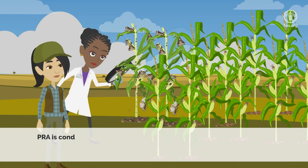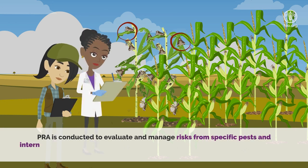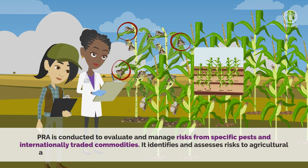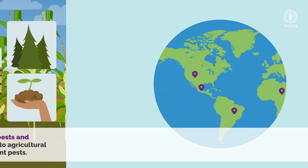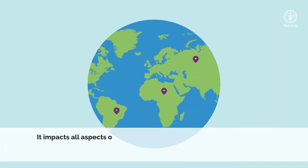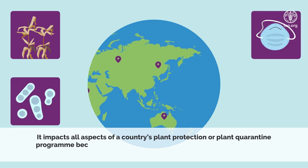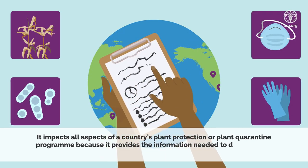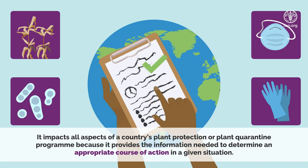Pest risk analysis is conducted to evaluate and manage risks from specific pests and internationally traded commodities. It identifies and assesses risks to agricultural and horticultural crops, forestry, and the environment from plant pests. It impacts all aspects of a country's plant protection or plant quarantine program, because it provides the information needed to determine an appropriate course of action in a given situation.